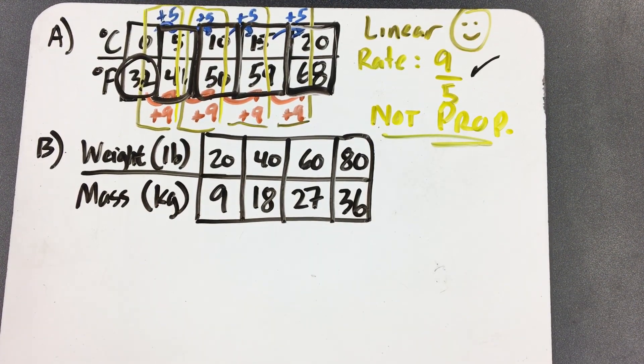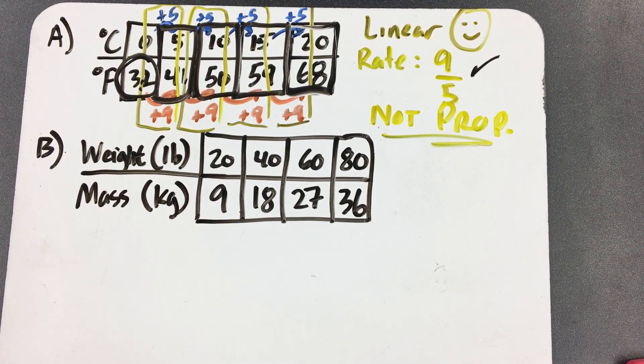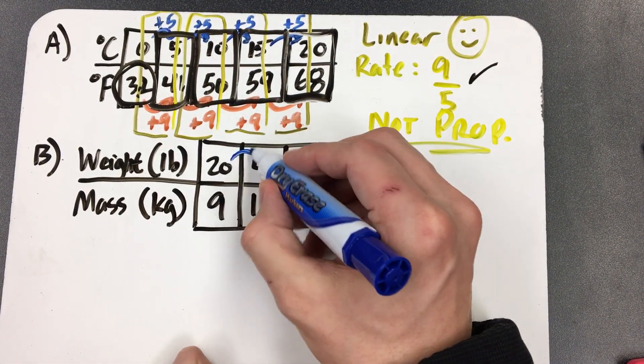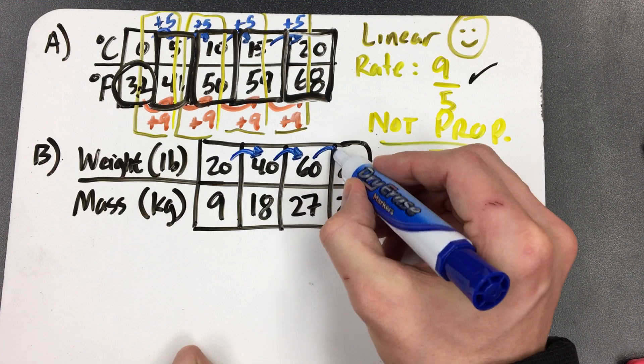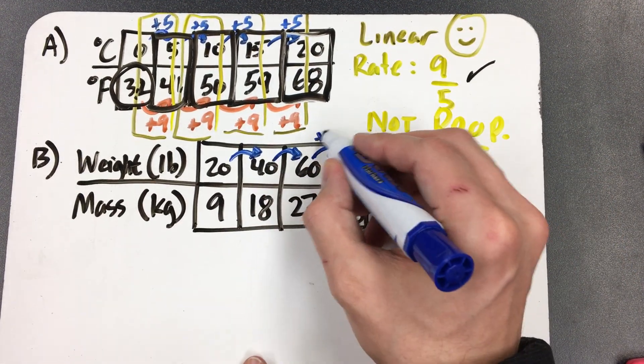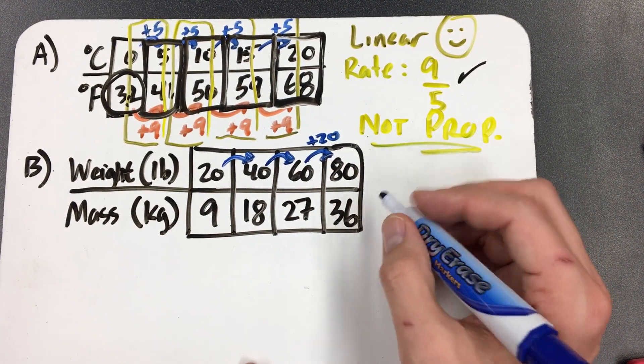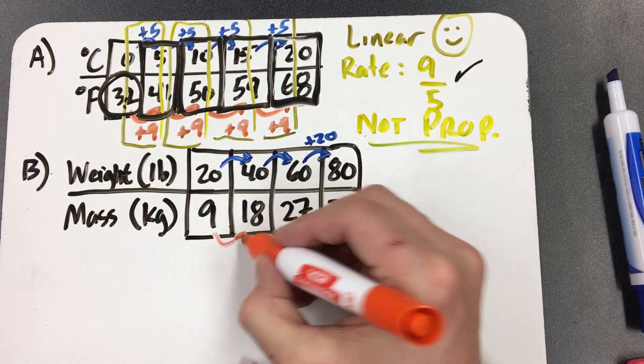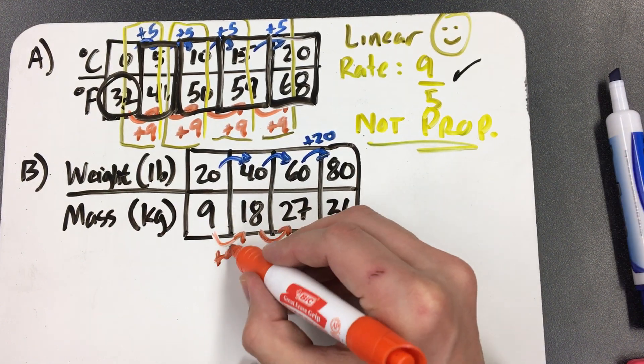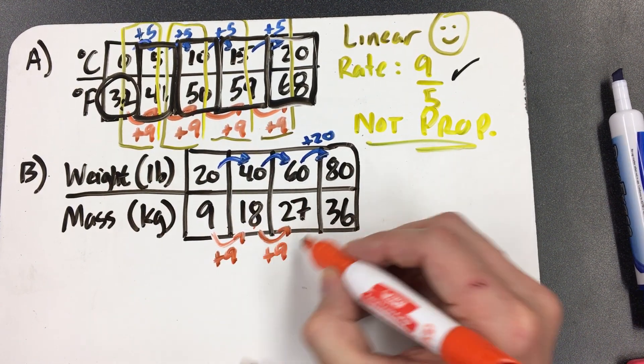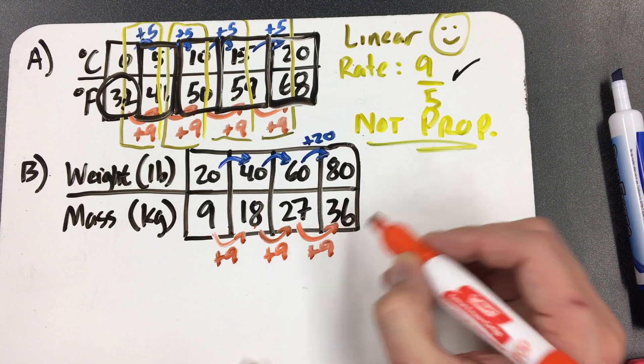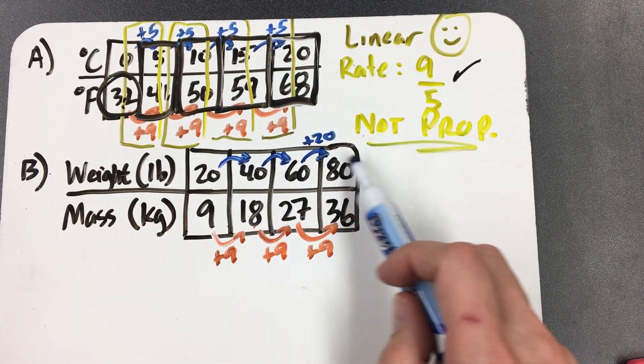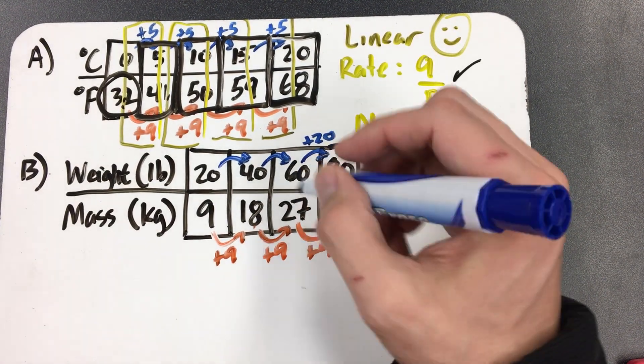Let's look at this next one, because I think this next one might be. If I do the first step that we did on the last one, you can see here what is the weight counting by every time? 20 to 40, 40 to 60, 60 to 80. Isn't that adding 20 every time? I don't need to write that on every single one. So it's adding 20. Let's check out the mass down here, which they're measuring in kilograms. From 9 to 18, that's adding 9. 18 to 27, that's adding 9. From 27 to 36, that's adding 9.